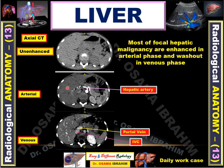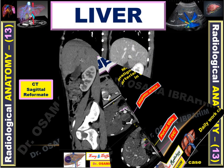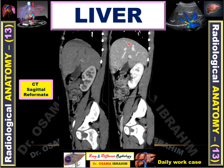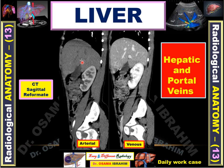The arterial phase can also be used to diagnose malignant hepatic lesions, as most focal hepatic malignancies enhance in that phase and wash out in the venous phase. In this sagittal view showing the liver in the arterial phase, the cortex of the kidney is opacified and differentiated from the medulla. In the nephrogenic phase, both cortex and medulla are opacified. Hepatic and portal veins can only be visualized in the venous phase, while in the arterial phase they appear non-opacified.